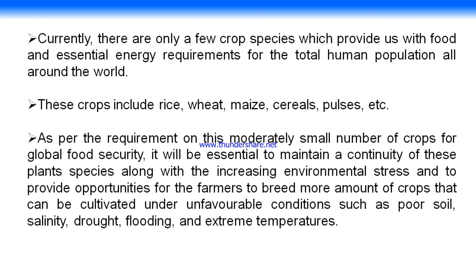Currently only a few crop species provide essential food and energy requirements for the total human population worldwide. The main crops include rice, wheat, maize, cereals, and pulses. It is essential to maintain continuity of these plant species under increasing environmental stress and to provide opportunities for farmers to breed crops that can be cultivated under unfavorable conditions like poor soil, salinity, drought, flooding, and extreme temperatures.